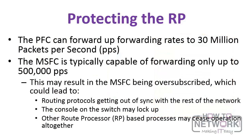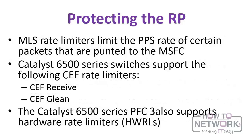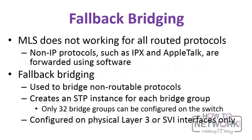The MSFC can be oversubscribed because the PFC can forward up to 30 million packets per second, whereas the MSFC is typically capable of forwarding only up to 500,000 packets per second. This can lead to problems such as routing protocols getting out of sync or the console on the switch getting locked up. MLS rate limiters limit the packets-per-second rate of certain packets that are punted to the MSFC. The 6500 series supports CEF rate limiters and hardware rate limiters. Note that MLS does not work for all routed protocols; non-IP protocols such as IPX and AppleTalk are forwarded using software.